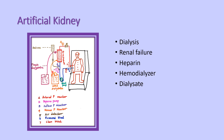The artificial kidney also has many pressure monitors. The first is the atrial pressure monitor, the second is the heparin pump, the third is the inflow pressure monitor, the fourth is the venous pressure monitor, and the fifth is the air detector.